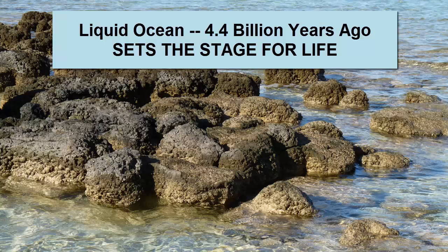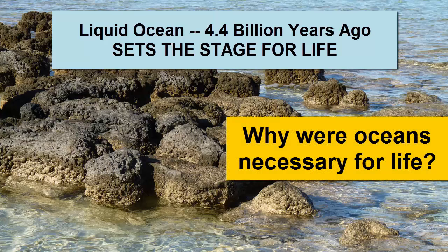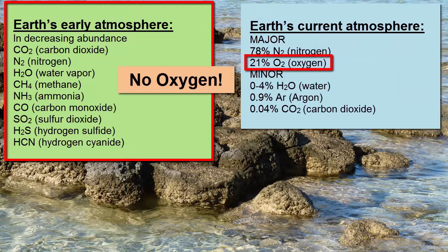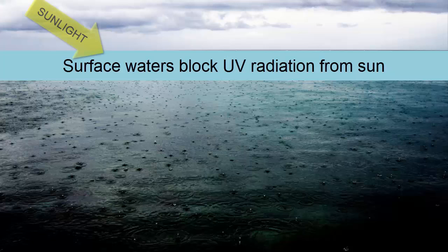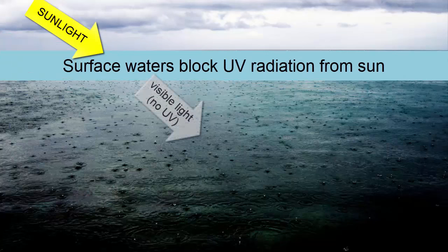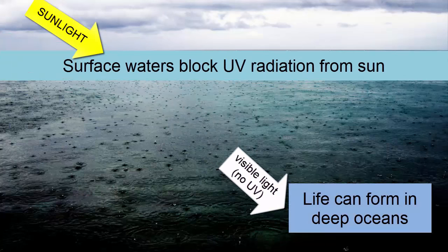With a liquid ocean layer present on Earth's surface 4.4 billion years ago, the stage was set for the earliest life to evolve. Why were oceans necessary for life? Early Earth had no oxygen in its atmosphere, which means it also had no ozone layer. Ultraviolet radiation from the sun readily reached the surface and would have irreparably damaged any biological material. Surface waters in the ocean block ultraviolet radiation, and thus oceans are the perfect place for life to first form.